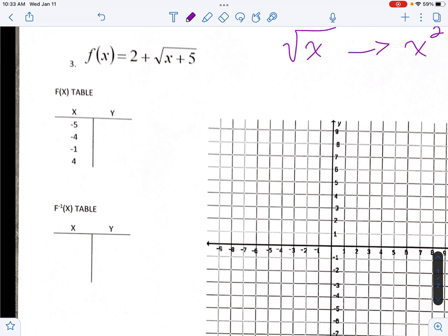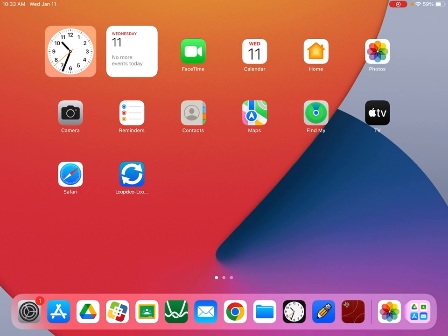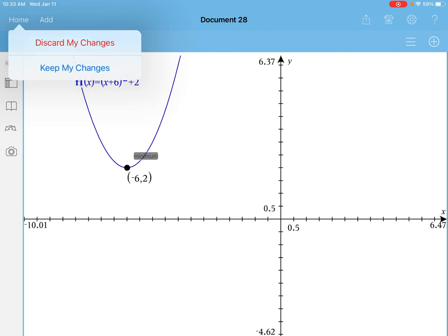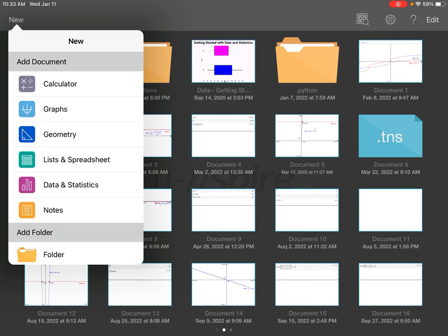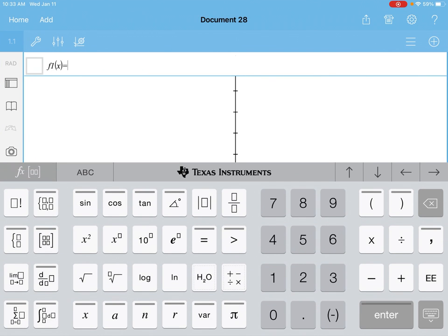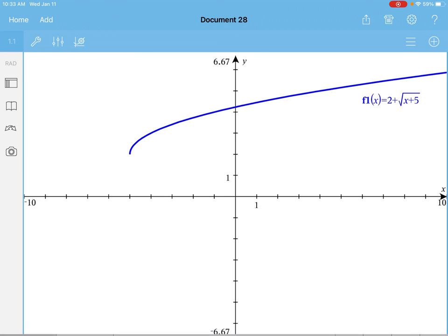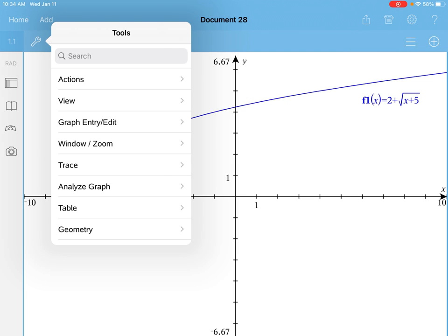The first thing we want to do is take our equation and put it into the calculator. We're going to go new graphs. We're going to type in our equation, 2 plus the square root of x plus 5. We need to pull up some data from the table. We're going to do control T if you're using the handheld. If you're using the Inspire app, which I'm using, it's under menu table.